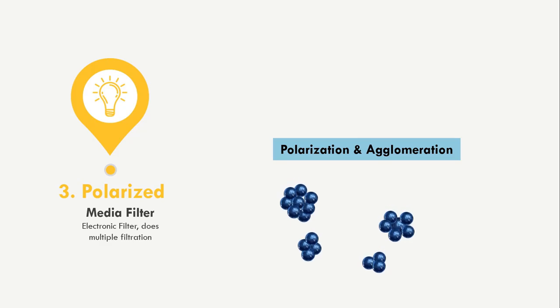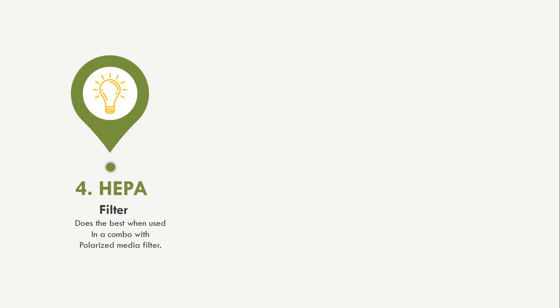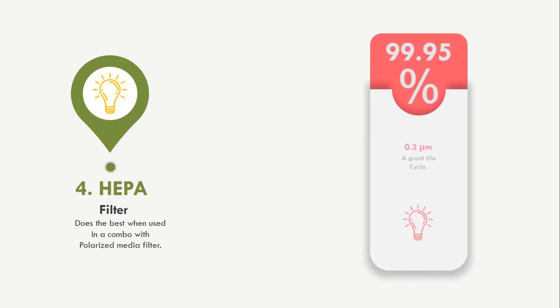These larger particles are then filtered by the HEPA filter. HEPA filters are the most commonly used air filters, capable of filtering 0.3 micrometer particulates at 99.5% accuracy. The combined effect of the polarized media filter and HEPA filter allows filtering of even smaller particulates than 0.3 microns — this is how EDS-2000 can filter novel coronavirus, which is 2.4 times smaller than standard HEPA capabilities. The HEPA filter in EDS-2000 has a life cycle of up to 800 hours.